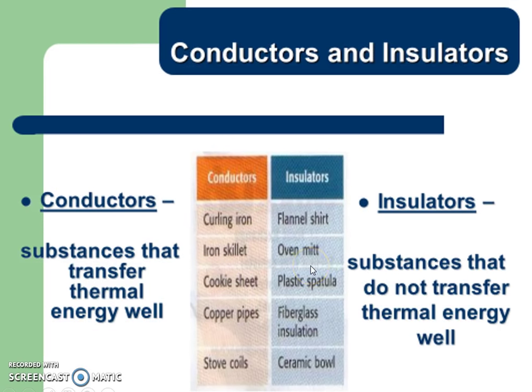There are conductors and insulators. A conductor is any substance that transfers thermal energy well, while an insulator is a substance that does not transfer thermal energy well. Good conductors include metals — look at all these metals here, things that conduct energy well. Put a metal spoon on the stove and it's going to get hot. Insulators are things that don't transfer energy well, like oven mitts, fiberglass insulation, ceramic bowls, styrofoam, plastic, and rubber. If you go to a football game and they give you hot chocolate in a styrofoam cup, the cup isn't scalding hot because styrofoam is an insulator — it can't transfer thermal energy very well.